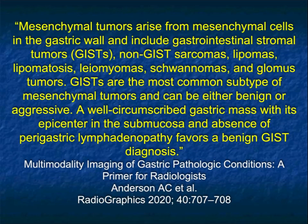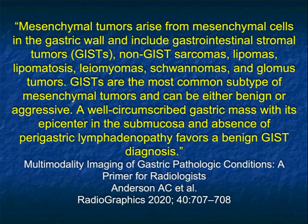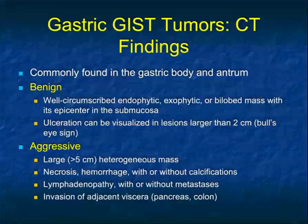They express a tyrosine kinase growth factor receptor that can be targeted for treatment — typically Gleevec. Mesenchymal tumors arise from mesenchymal cells in the gastric wall and include GIST tumors, non-GIST tumors, lipomas, leiomyomas, schwannomas, and glomus tumors. GISTs are the most common subtype and can be benign or aggressive. A well-circumscribed gastric mass with its epicenter in the submucosa and absence of perigastric lymphadenopathy favors a benign GIST tumor.